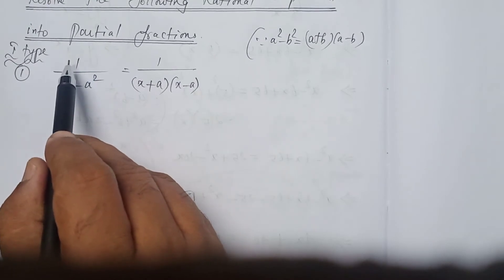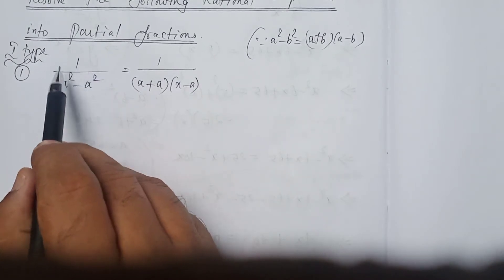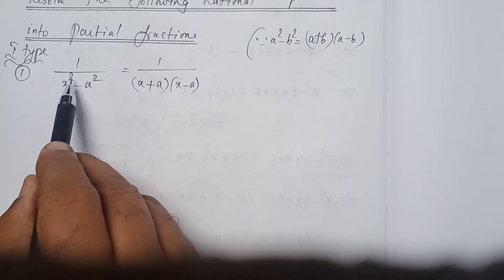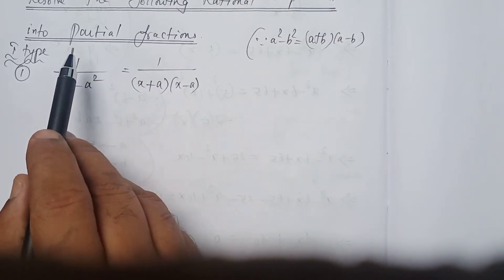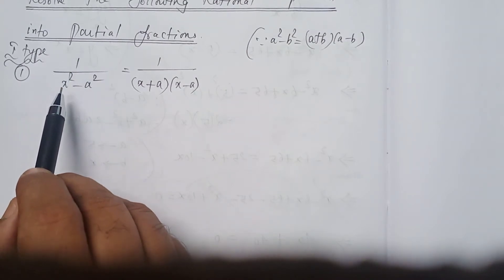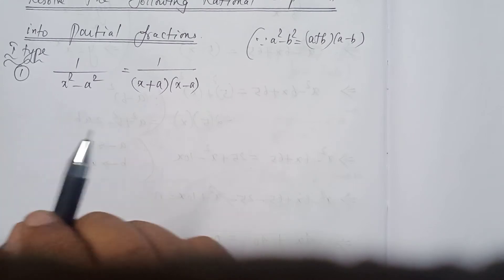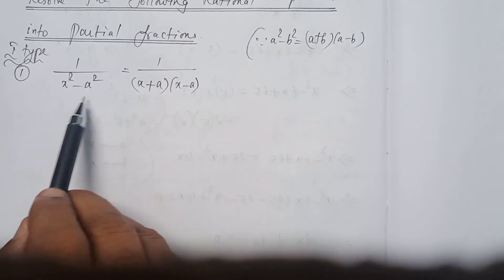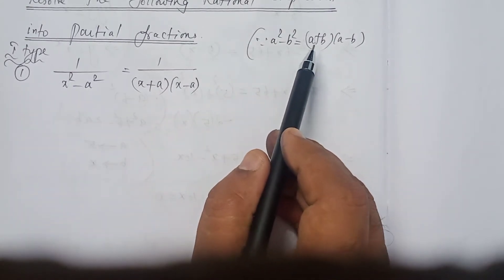Here there is no x in the numerator at all, so the degree of the numerator is 0. In the denominator we have x squared, so the degree of the denominator is 2. Since the numerator degree is 0 and the denominator degree is 2, the numerator degree is less than the denominator degree — so it is called a proper rational expression. In that case, write the numerator as it is, and if possible factorize the denominator. Here we have applied the identity and it has been factorized.